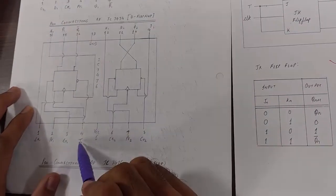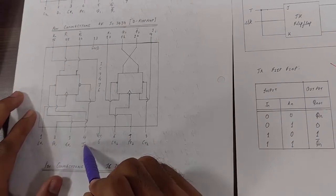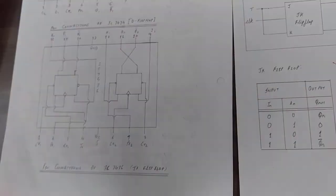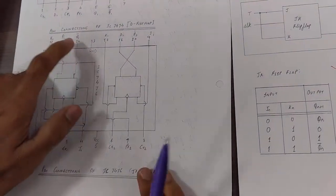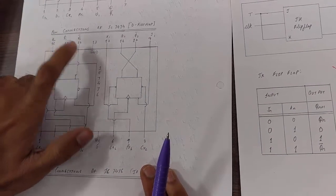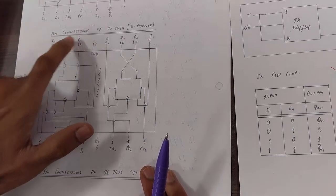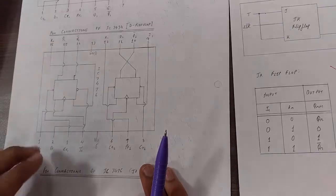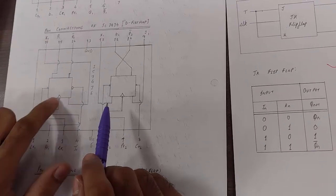We can see that J0 input is given to pin number 4. K0 is given to pin number 16. Output is taken from pin number 15 and 14. Pin 14 gives us Qn bar and pin 15 gives us Q. And clock is applied to pin number 1.